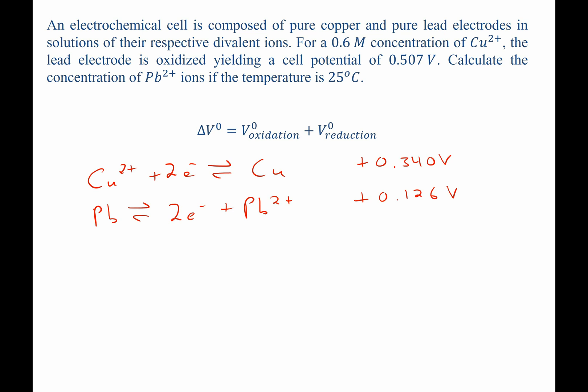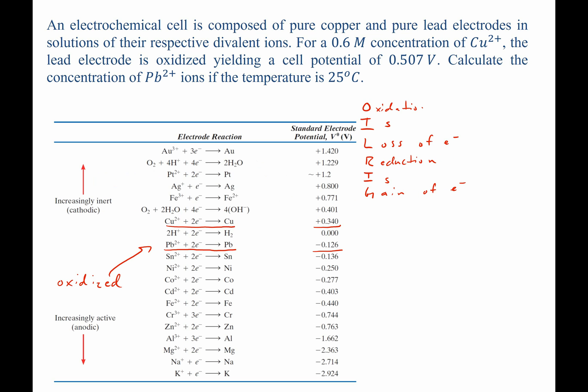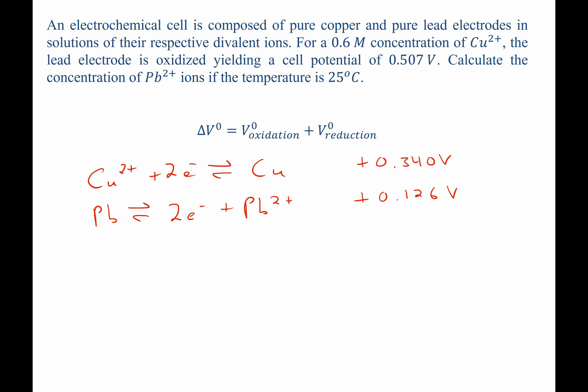That was negative 0.126 volts on the previous plot. However, when we flip it to write it as an oxidation instead of a reduction, we change the sign. Therefore, we have two positive values. When you add the reduction potential for both oxidation and reduction, you get the overall cell potential, delta V naught. In this case, that value equals 0.466 volts.